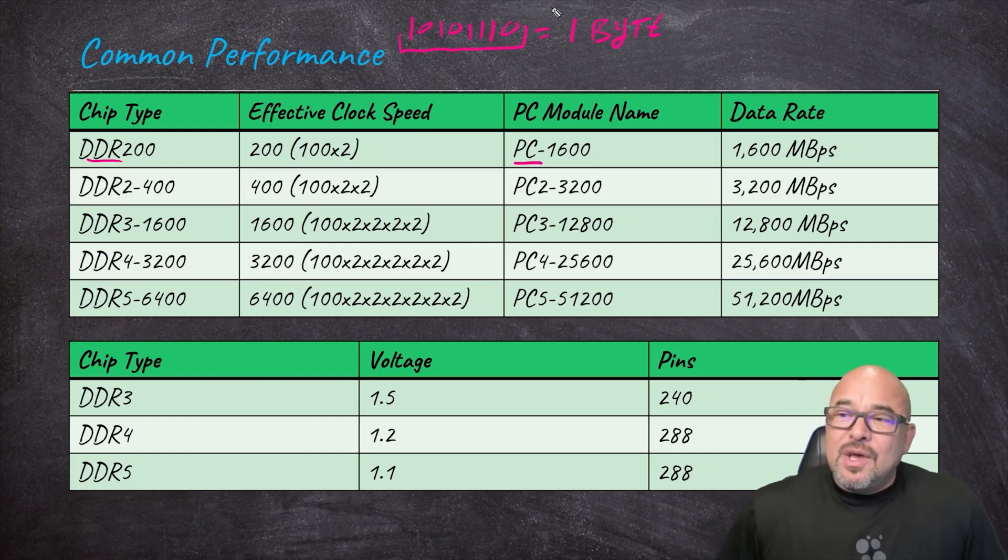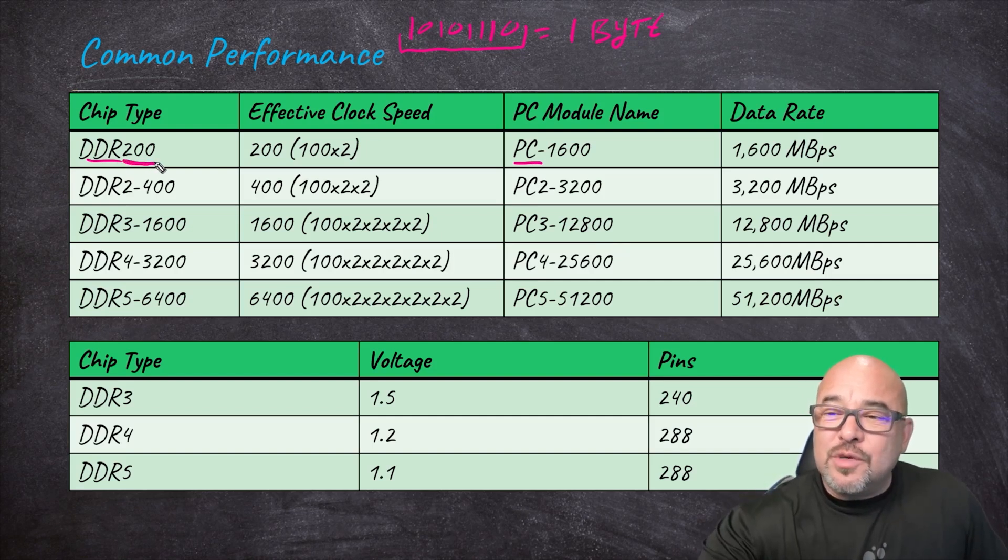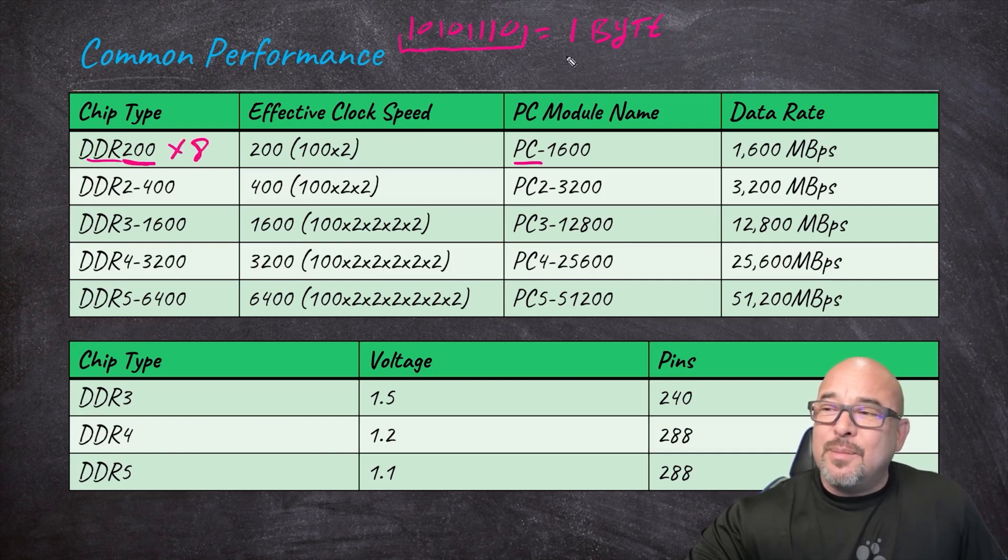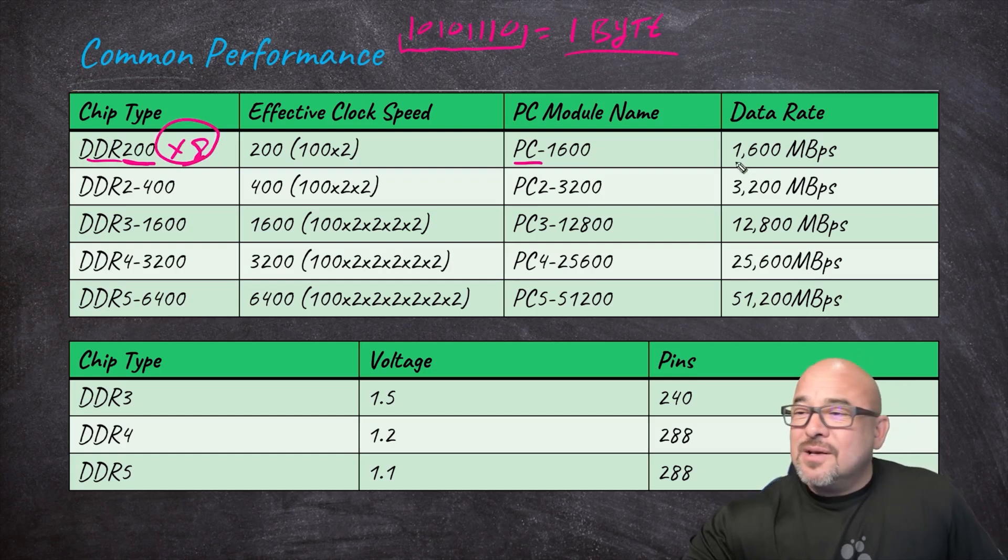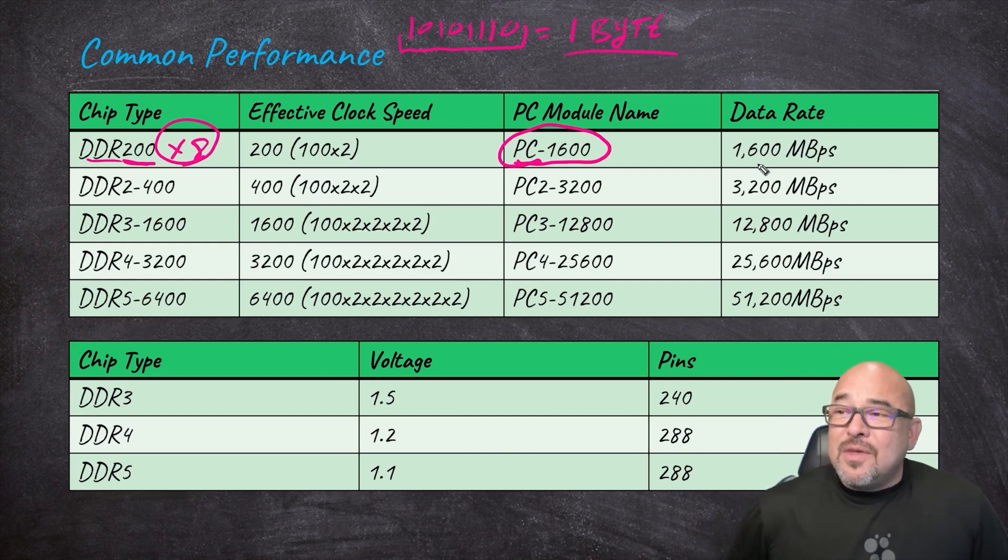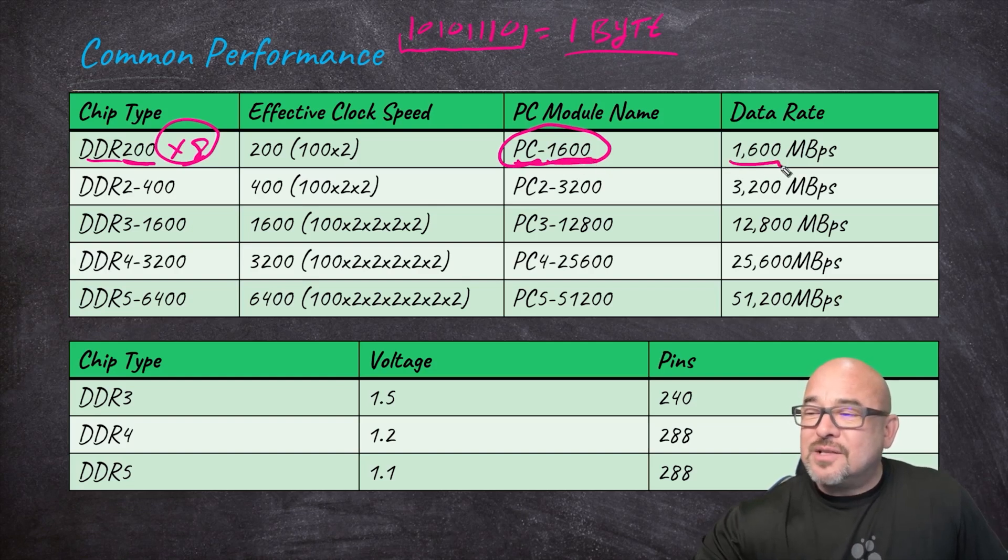I can look at this whole thing collectively as a single byte. When it comes to the PC module name, what it does is it takes whatever my DDR rating is here, which is 200, and you multiply it by eight because that's how many is in a byte. So you take this times eight and that gives you this PC name. What's the data rate for that? Well that will be really the same. Whatever the module name is, whatever we see on the end of it, that's the same as how many megabytes per second can be transferred in and out of that memory module.